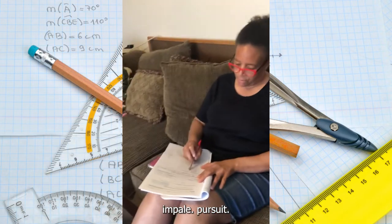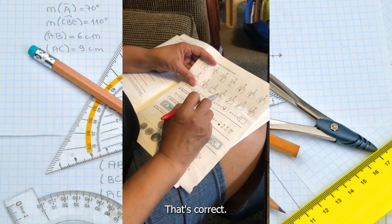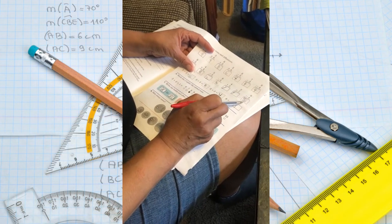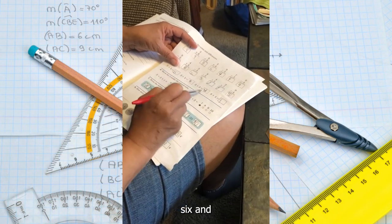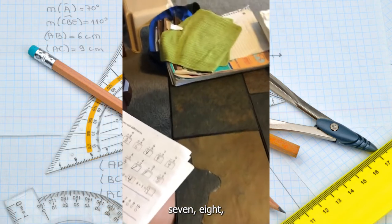Impel. Pursuit. That's correct. Seven, seven, it's nine, five, six, eight, four, nine, seven, eight, five, six, seven.